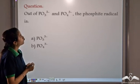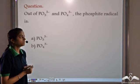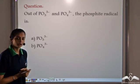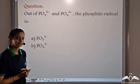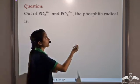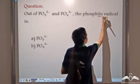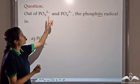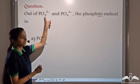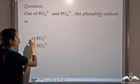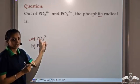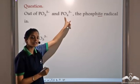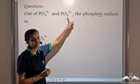Out of PO3 3- and PO4 3-, which is the phosphite radical? We know that the suffix '-ite' is given to the radical with lesser number of oxygen atoms. So PO3 3- is the phosphite radical. The one with a greater number of oxygen atoms — PO4 3- — should be the phosphate radical.